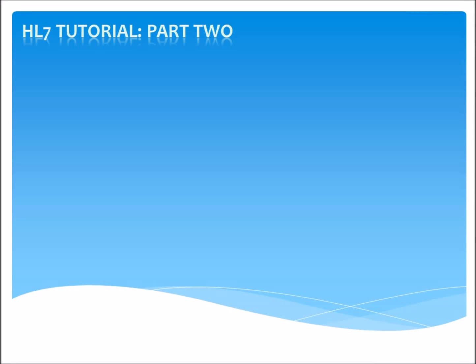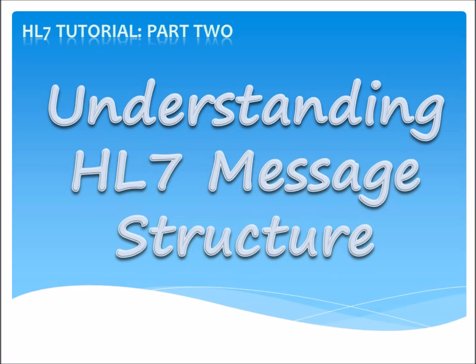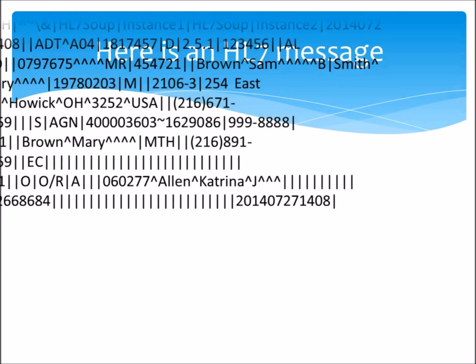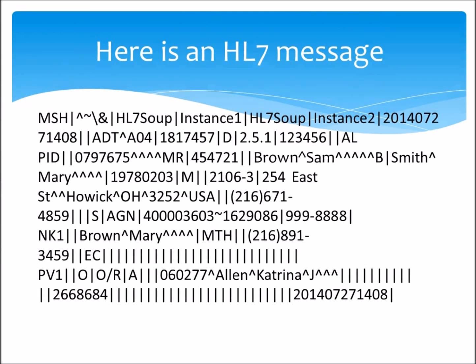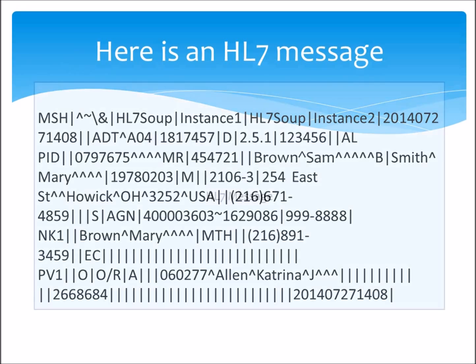Hello and welcome to the second video in the series of HL7 messaging tutorials, where we focus on understanding the HL7 message structure. Let's start with our sample HL7 message from the previous tutorial. I can make out a bit of information here — I can see a couple of names and a country, but I don't really see the context of these. To explain what's going on, let's start by simplifying this message right down to its most basic element.